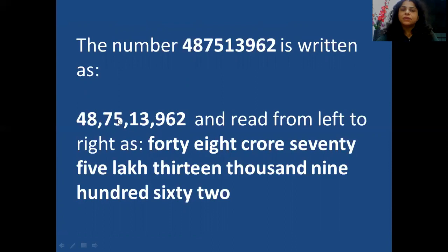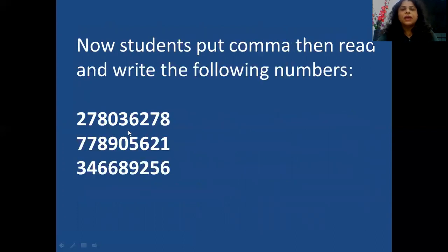In the lakh period we have lakh and 10 lakh, so we put a comma after 10 lakh. After putting the commas, we read the number from left to right as: 48 crore, 75 lakh, 13,962. Now students, try these numbers — first put the commas, then read the number and write its number name.